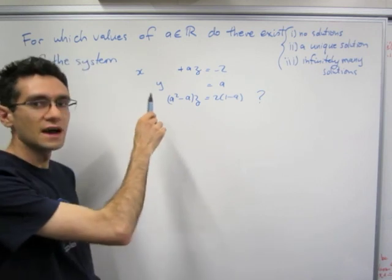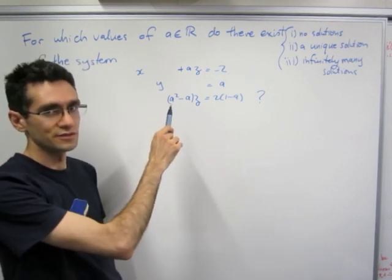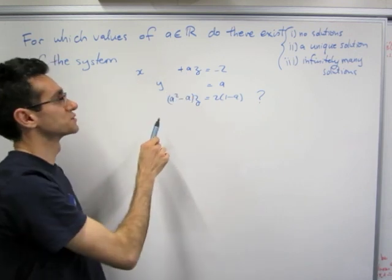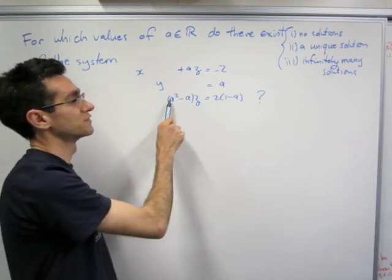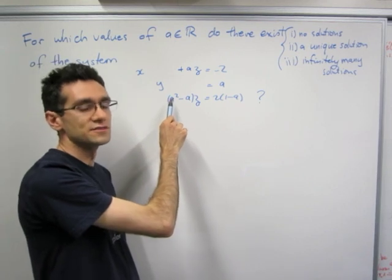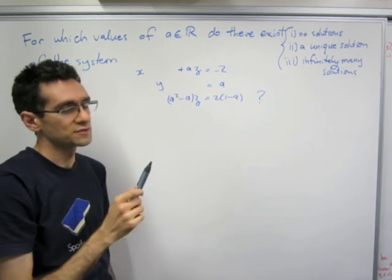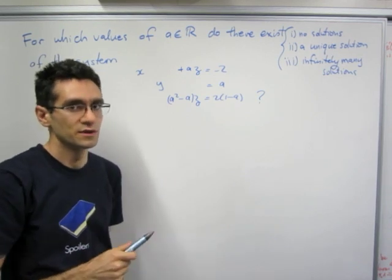Now we consider here a as being a fixed real number, it's not a variable. x, y and z here are the variables and we just want to know, fix an a and for any given fixed a which of these three cases is true. So we have to break it down into different cases depending on what a is.